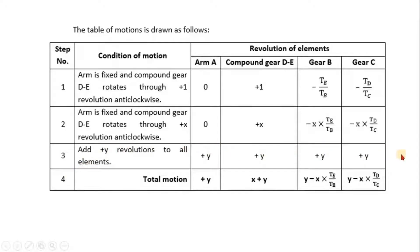Now add y revolution to all the elements here, so +y is added and this becomes 0 + y is +y, x + y, y - x × TE/TB, y - x × TD/TC. So once the tabulation is done we have all the equations necessary.